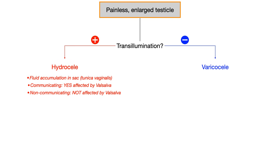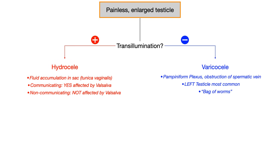For the varicocele, the affected anatomy is the pampiniform plexus. This is due to obstruction of the spermatic vein, and that occurs proximally. You also want to know that it's usually the left testicle that most commonly has the varicocele.